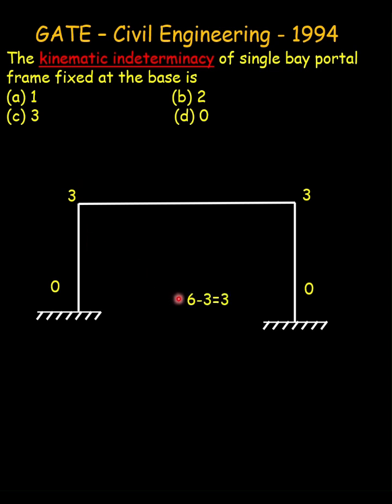If you consider the axial deflections as negligible, then 6 minus 3 equals 3. The correct option is 3.